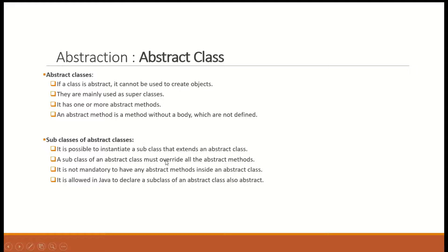A subclass of an abstract class must override all the abstract methods — it is overriding because the method heading is given in the abstract class which is the superclass, and in the subclass you implement the abstract method. It is not mandatory to have any abstract method inside an abstract class — you can declare an abstract class without abstract methods, and Java will not give any compilation errors.